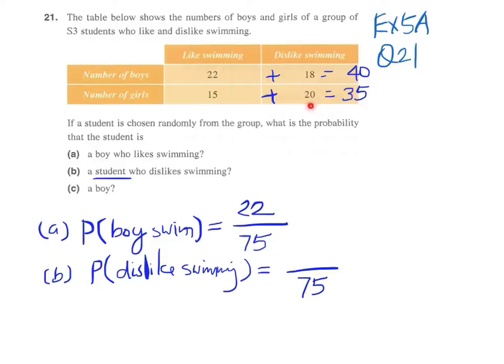This one, 18, and this one, 20. So there will be 18 plus 20 students who dislike swimming. 18 plus 20, so this will be 38 over 75.